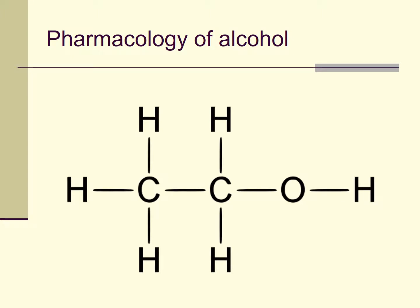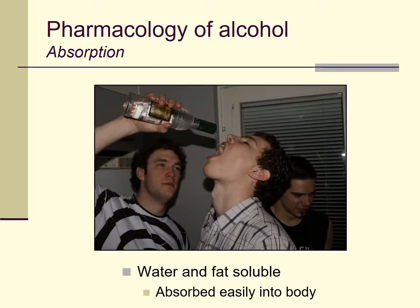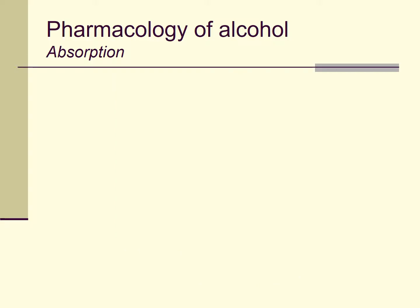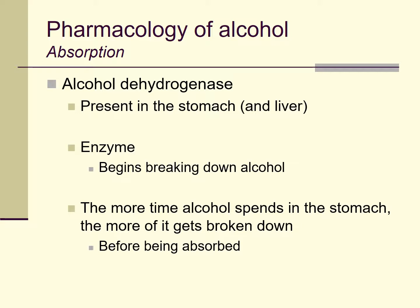Let's start with the pharmacology of alcohol. Alcohol is water soluble and consumed in solution with water. It's also somewhat fat soluble, and these two features mean that alcohol absorbs quite readily into the body. If you drink alcohol on an empty stomach, about 20% or so will be absorbed directly from your stomach, and most of the rest will be absorbed in your small intestine pretty quickly. You have an enzyme in your stomach and liver called alcohol dehydrogenase, which is important for the first step in the metabolic breakdown of alcohol. The more time alcohol spends in your stomach, the more time it has to be broken down before getting absorbed.